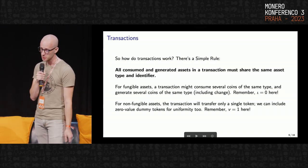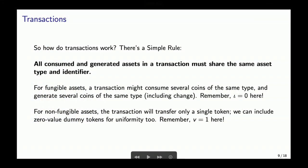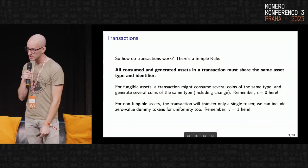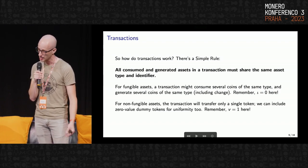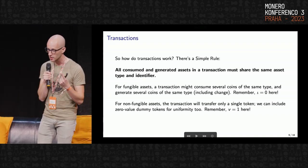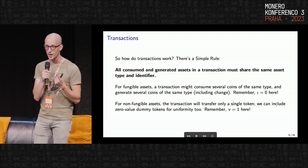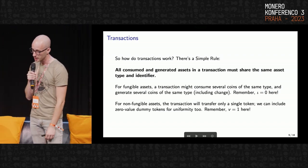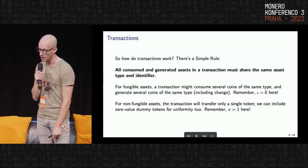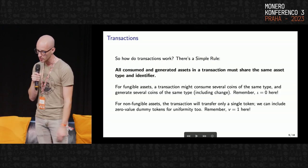How do you do transfer or spend transactions? There's one simple rule: cryptographically, we want to ensure that all consumed and generated assets in a transaction — inputs and outputs — share the same asset type and identifier. For fungible assets, you might consume several coins to get enough value, and generate several coins of the same type including change as usual, with the identifier iota set to zero so all fungible assets look the same. For non-fungible assets, the transaction transfers a single token, which has a non-trivial identifier iota maintained throughout so you can prove you own a particular non-fungible token. You can also include some zero-value dummy tokens for uniformity, which is why we include the V equals one value rule.